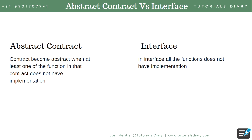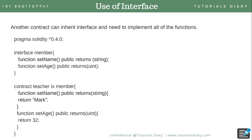We already talked about abstract contracts in the last video, and some people ask: what is the difference between an abstract contract and an interface? The major difference is that in an abstract contract, if at least one function doesn't have a function body, that contract becomes abstract. So you could have four functions where three have a body but one doesn't. In an interface, however, all functions must not have a function body — that is the key difference.